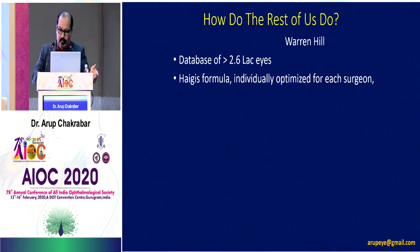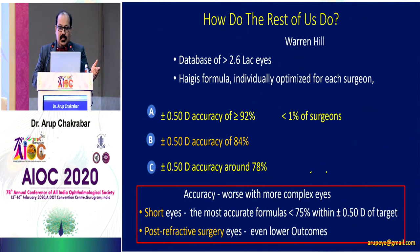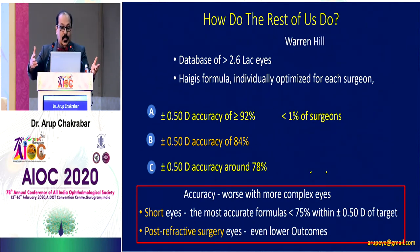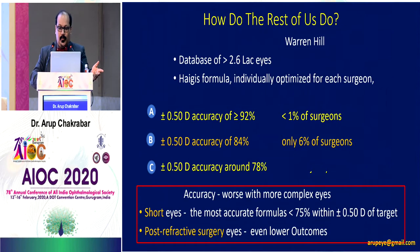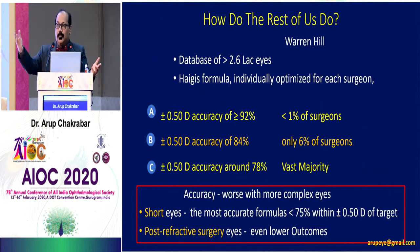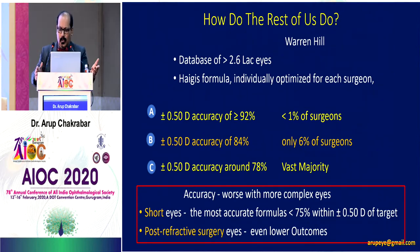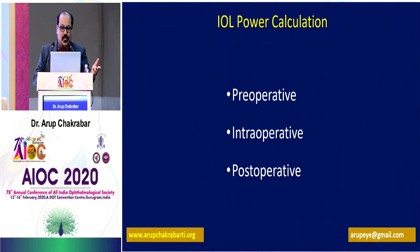From his database of more than 2.6 lakh eyes, where Haigis' formula was optimized individually for A constant for each surgeon, only 1% of cataract surgeons achieved a refractive accuracy of plus or minus 0.5 diopter in 92% of their patients. This figure hovers around 84% for only 6% of surgeons. For the majority of surgeons, the refractive accuracy is lower. So there is a lot of ground to cover, and this is what we are here for today.